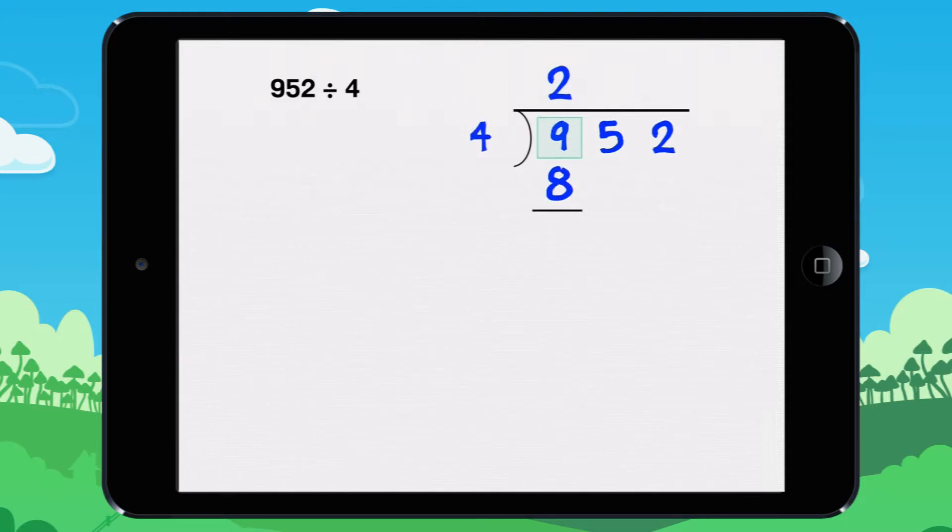We need to find the remainder. 9 minus 8 equals 1. The remainder is 1.